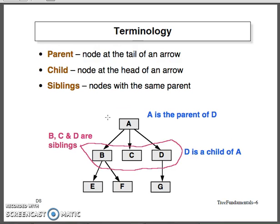There are different terminologies as far as data structures are concerned. Parent is the node at the tail of an arrow — that means it will be the very first node. In this example, A is the parent node for elements B, C, and D, because all elements B, C, and D are derived from A. Similarly, the child is the node at the head of an arrow — an arrow pointing to elements B, C, D — so they are called children. A is the parent and B, C, D are the children of node A.